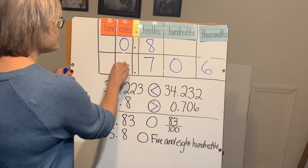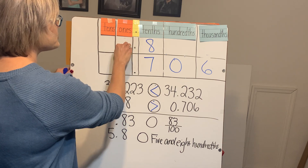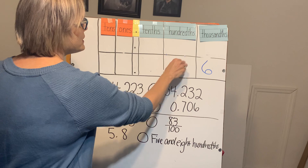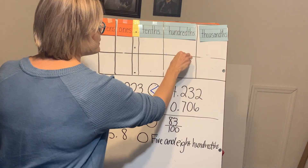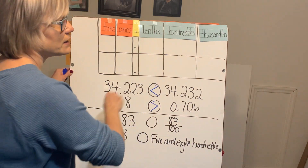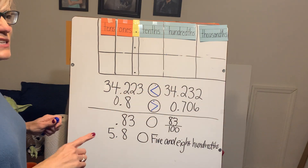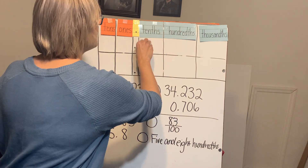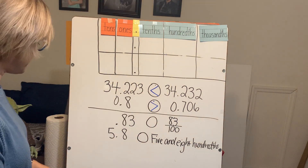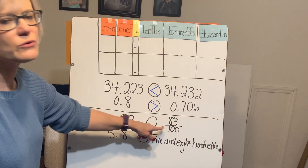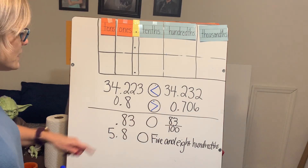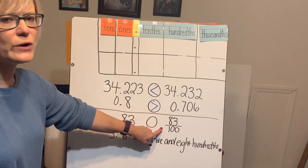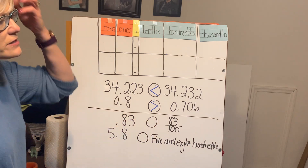I drew a line here because the comparisons below are a little different. We've done listing numbers in ascending or descending order and we've done greater than and less than, but we haven't thrown in the fraction form. So we're going to look at the fraction form here — we need to know how to read the fraction as well as how to read the decimal.